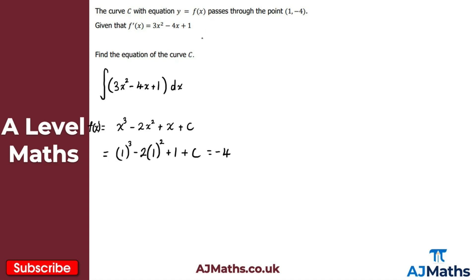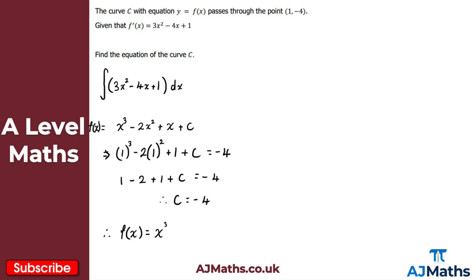Evaluating: 1 cubed is 1; 1 squared is 1, so minus 2 lots of 1 is minus 2. So 1 minus 2 plus 1 plus c equals minus 4, which gives 0 plus c equals minus 4, so c equals minus 4. Therefore, f of x equals x cubed minus 2x squared plus x minus 4, replacing c with the value we found.